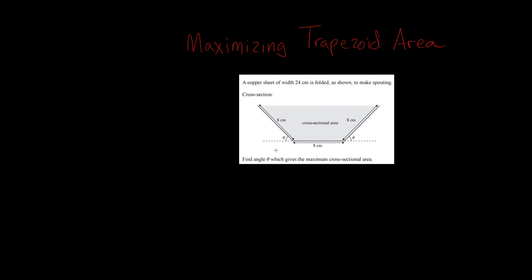The first thing we have to do is figure out how to calculate the area of a trapezoid. There's an equation that says the average of the bases times the height gives you the area of the trapezoid, but I'm actually going to approach it a slightly different way. I'm going to draw some imaginary lines going down like this, which is going to split my trapezoid up into two triangles and a rectangle.